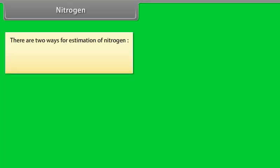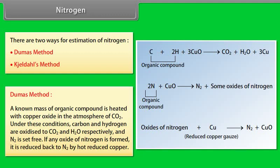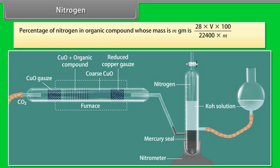Nitrogen — Dumas Method: A known mass of organic compound is heated with copper oxide in an atmosphere of carbon dioxide. Carbon and hydrogen are oxidized to CO₂ and water respectively, and nitrogen is set free. Any oxides of nitrogen formed are reduced back to nitrogen by hot reduced copper. The gases are passed through potassium hydroxide solution, which absorbs CO₂, and nitrogen is collected in the upper portion of the tube. Percentage of nitrogen in organic compound of mass M gm = (28 × V × 100) ÷ (22400 × M), where V is the volume of nitrogen at STP.